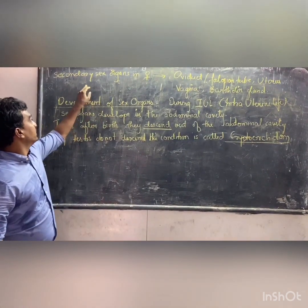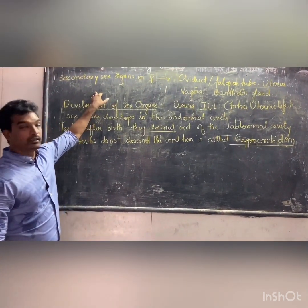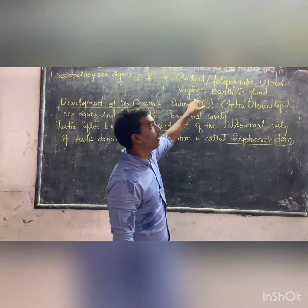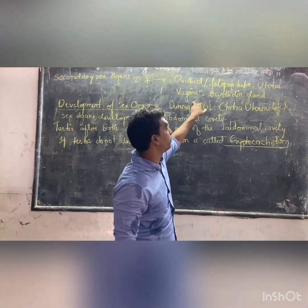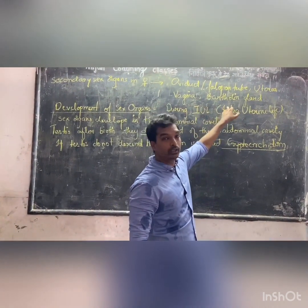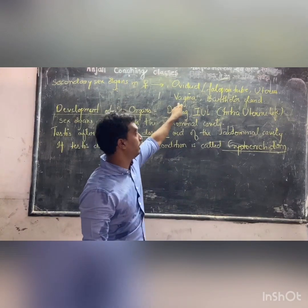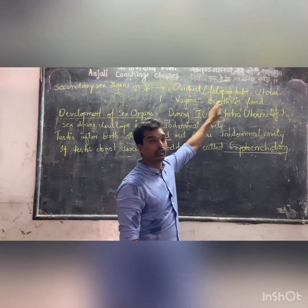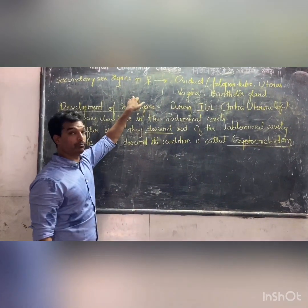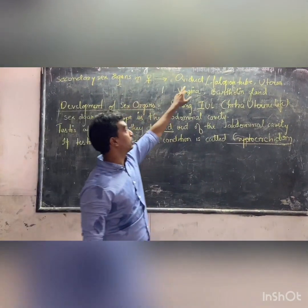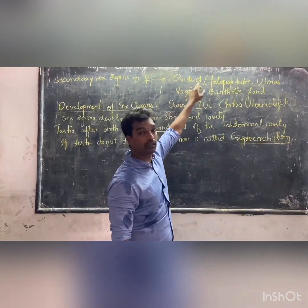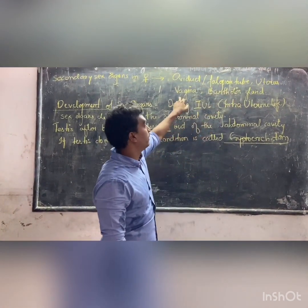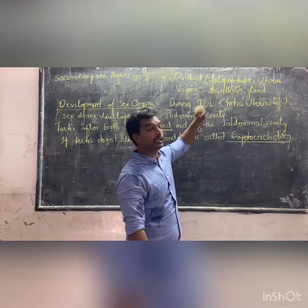The secondary sex organs in females are the oviduct (also called the fallopian tube), uterus, vagina, and Bartholin's gland.